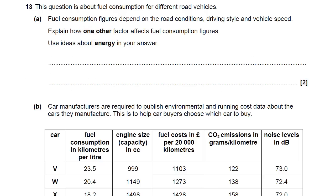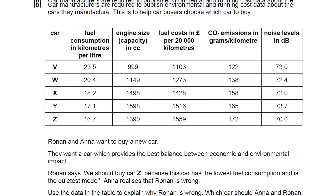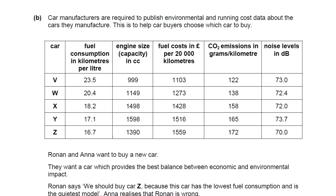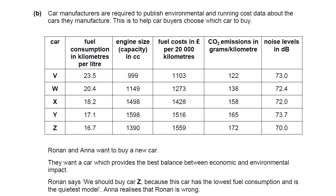Another data handling section. Car manufacturers are required to publish environmental and running cost data about the cars they manufacture — this helps car buyers choose which car to buy. Here are five different cars showing their fuel consumption, engine size, fuel cost, and CO2 emissions. Remember CO2 is our main greenhouse gas. And noise — noise is actually an environmental consideration because we talk about noise pollution.